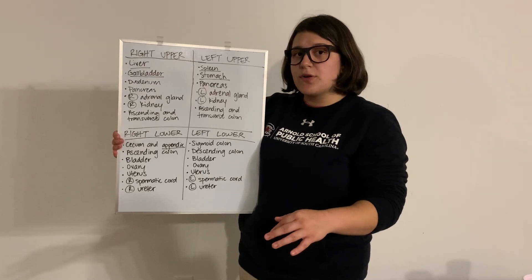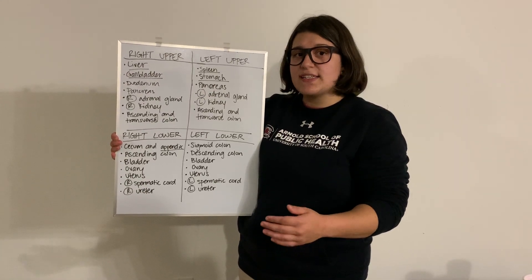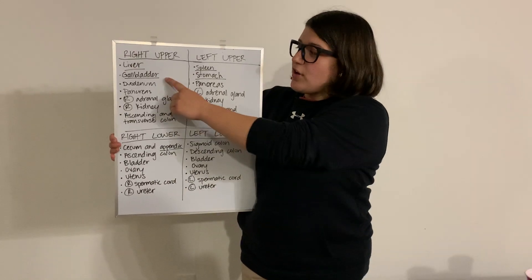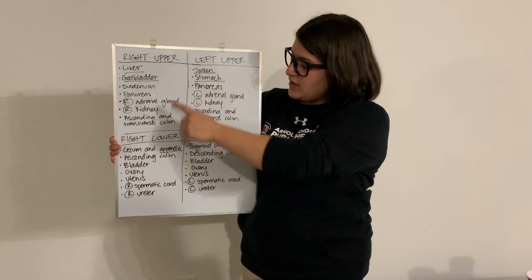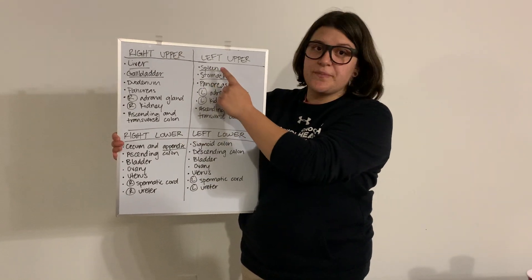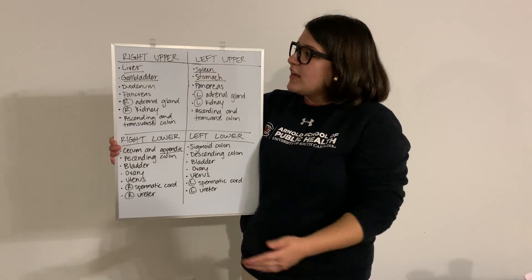A great acronym to remember these organs is GLASS — standing for gallbladder, liver, appendix, stomach, and spleen. So let's review the quadrants.